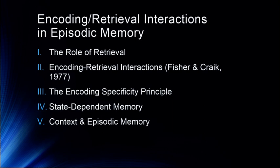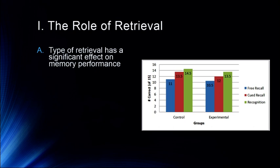Let's start with the role of retrieval. Type of retrieval has a significant effect on memory performance. Comparing memory performance in free recall, cued recall, and recognition: free recall is where you just write down whatever you can remember from a list of words. Cued recall is where you're given some sort of memory cue — this word was paired with that word, or this word was spoken by this person.